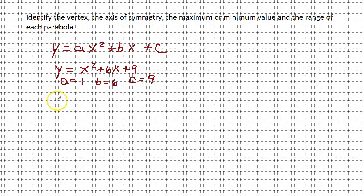In order to find a vertex or even the axis of symmetry, the x coordinate of the vertex and the equation of the axis of symmetry is x equals negative b over 2 times a. So negative 6 over 2 times 1, which is negative 6 over 2, which reduces to negative 3.